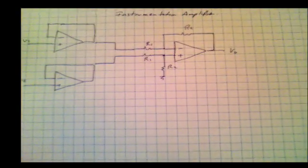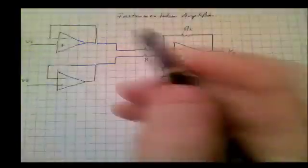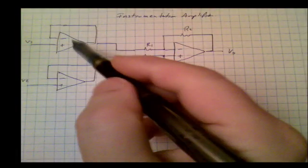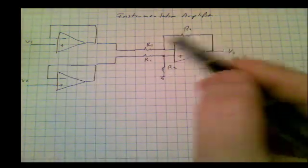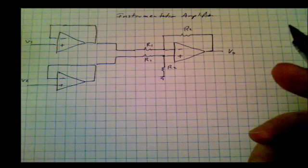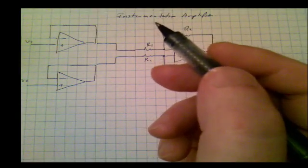This is an instrumentation amplifier. It consists of three op-amps: two which are unity gain buffers, and one which is a plain differential amplifier. So let's take a moment and see how this works and why we use it.